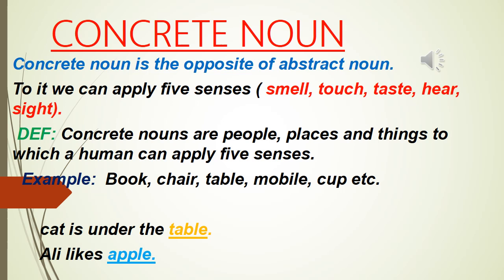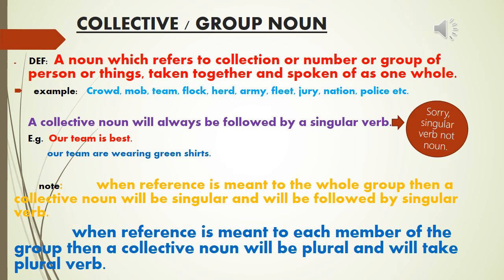It is not required that all five senses apply — if one or two senses apply, that is fine. For example: 'The cat is under the table' — table is a concrete noun. 'Ali likes apple' — apple is a concrete noun because we can smell, taste, touch, and see it.